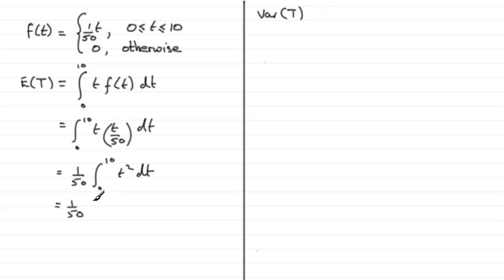What we've got then is 1/50. If we integrate t squared, it's going to be t cubed over 3: up one to the power, divided by the new power. And then the limits 0 to 10.